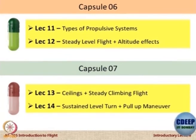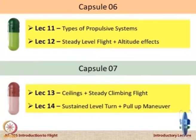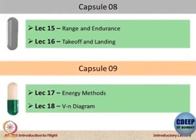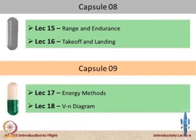After mid-sem, we go to capsule 6 where we have a quick look at the types of propulsive systems, because after this we will look at the effect of engine on various flight performance characteristics. We look at steady flight, then capsule 7 covers ceilings, climbing, turns, pull-ups. The two most important things for a transport aircraft — range and endurance — and for any aircraft, takeoff and landing.